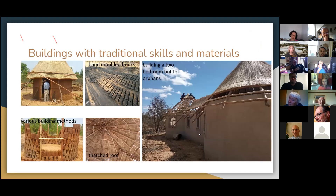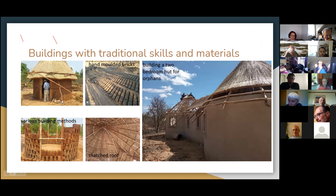Here are some examples of traditional buildings, using natural materials as far as possible. You can see various methods of building huts — they do hand-molded bricks. This building, made from that method with traditional thatching, was just about to be completed that week.